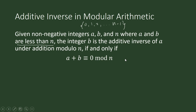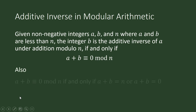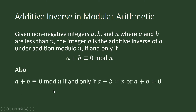b is the additive inverse of a under addition modulo n if and only if a plus b is congruent to 0 modulo n. This is also equivalent to the following statement: a plus b is congruent to 0 modulo n if and only if either a plus b is equal to n or a plus b is equal to 0.